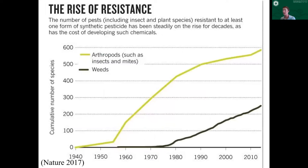Not surprisingly, since we've seen this increase in the use of pesticides, we're also seeing this rise of resistance. This graph from a Nature article in 2017 shows — the lighter green line on top are arthropods such as insects and mites, representing all individual species that have documented some type of resistance. Through the 60s, 70s, and 80s, we see a really rapid increase in arthropods resistant to different types of insecticides. We also see the same thing in weeds, picking up a little bit later into the 70s, 80s, 90s. Now there are hundreds of individual species with documented resistance, and in many cases an individual species might be resistant to multiple pesticides. So management just becomes that much more difficult.